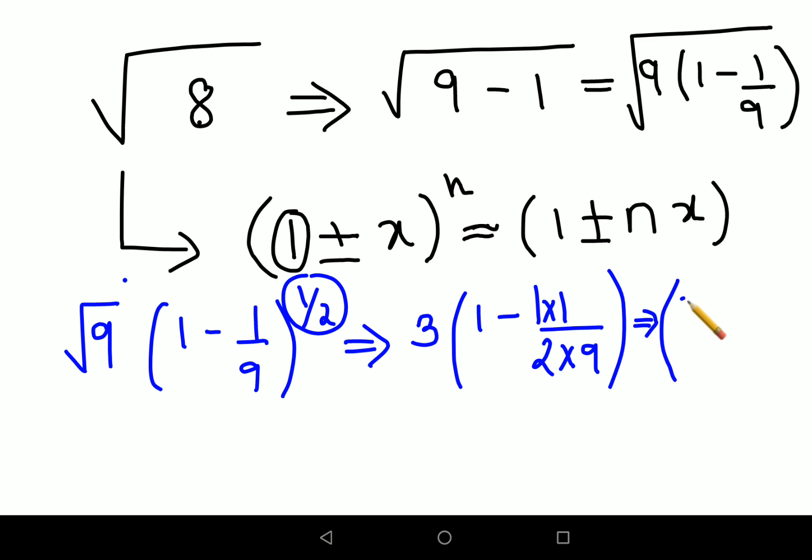So then what happens is we'll take this 3 inside, so I'll have 3 - 3/(2·9) which gets you 3 - 3/18. So now what happens is we were left with 3 - 3/18, so this can now be equal to 3 - 1/6.